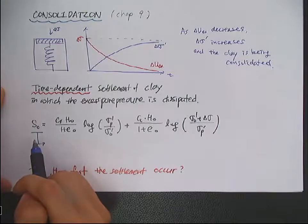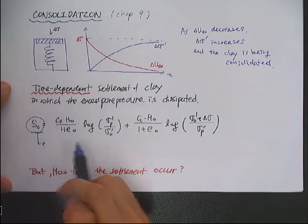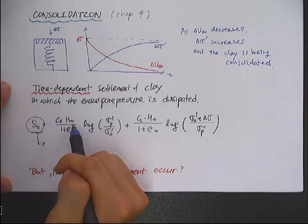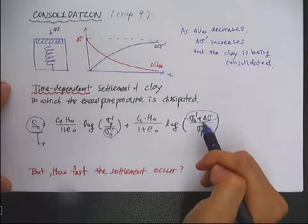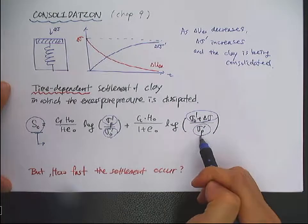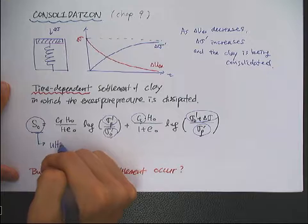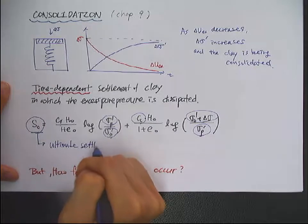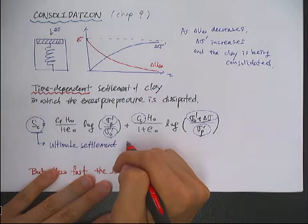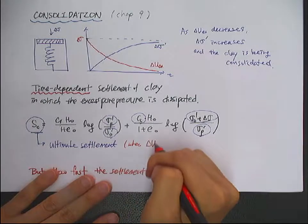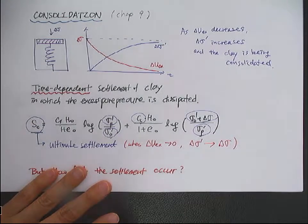We know how to calculate the ultimate consolidation settlement. The ultimate consolidation settlement SC can be calculated using the recompression index, original thickness, initial void ratio, initial vertical effective stress, final vertical effective stress, pre-consolidation stress, and the compression index. From here, we can calculate the ultimate settlement that will occur. This settlement will be achieved when Delta U excess goes to zero, so that Delta Sigma prime becomes the same as the total stress increment.